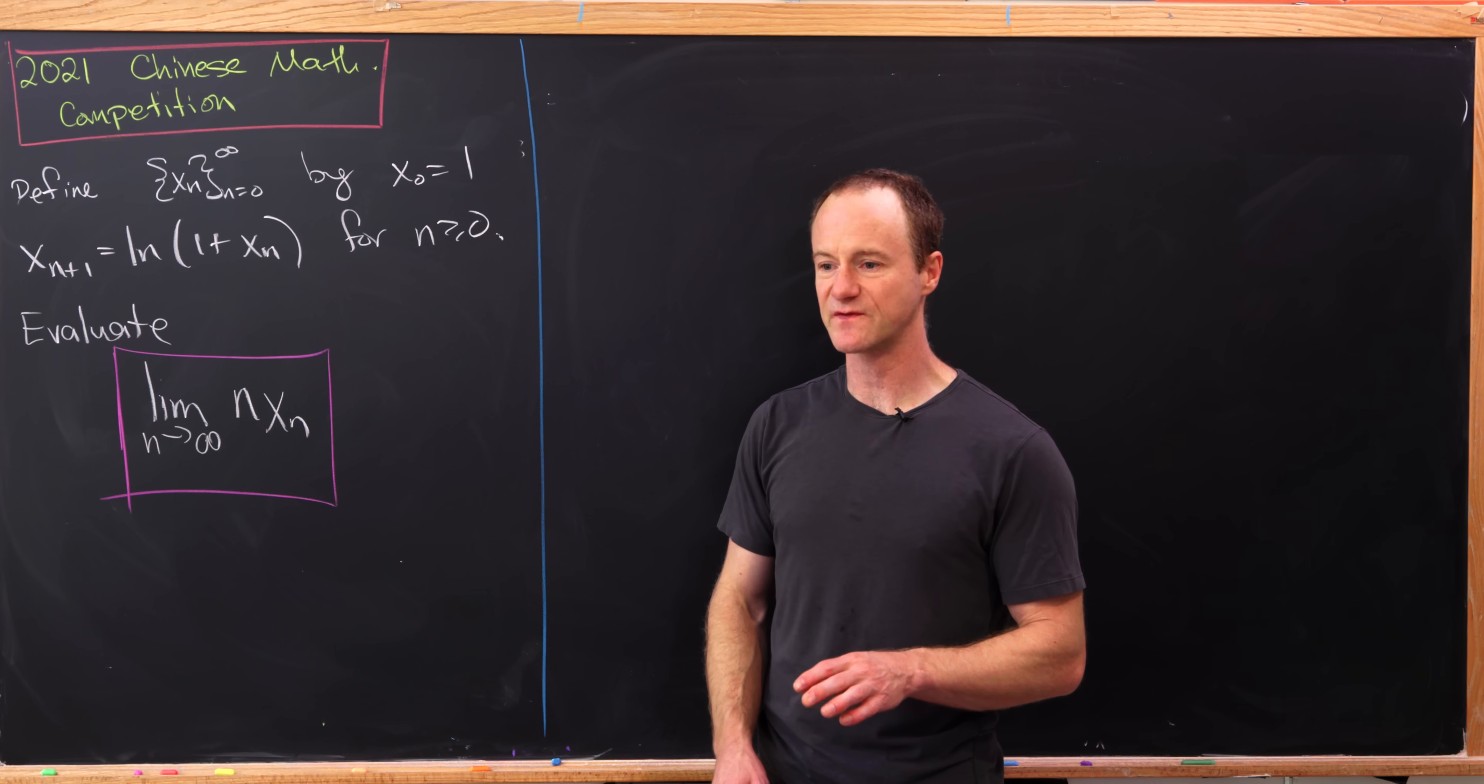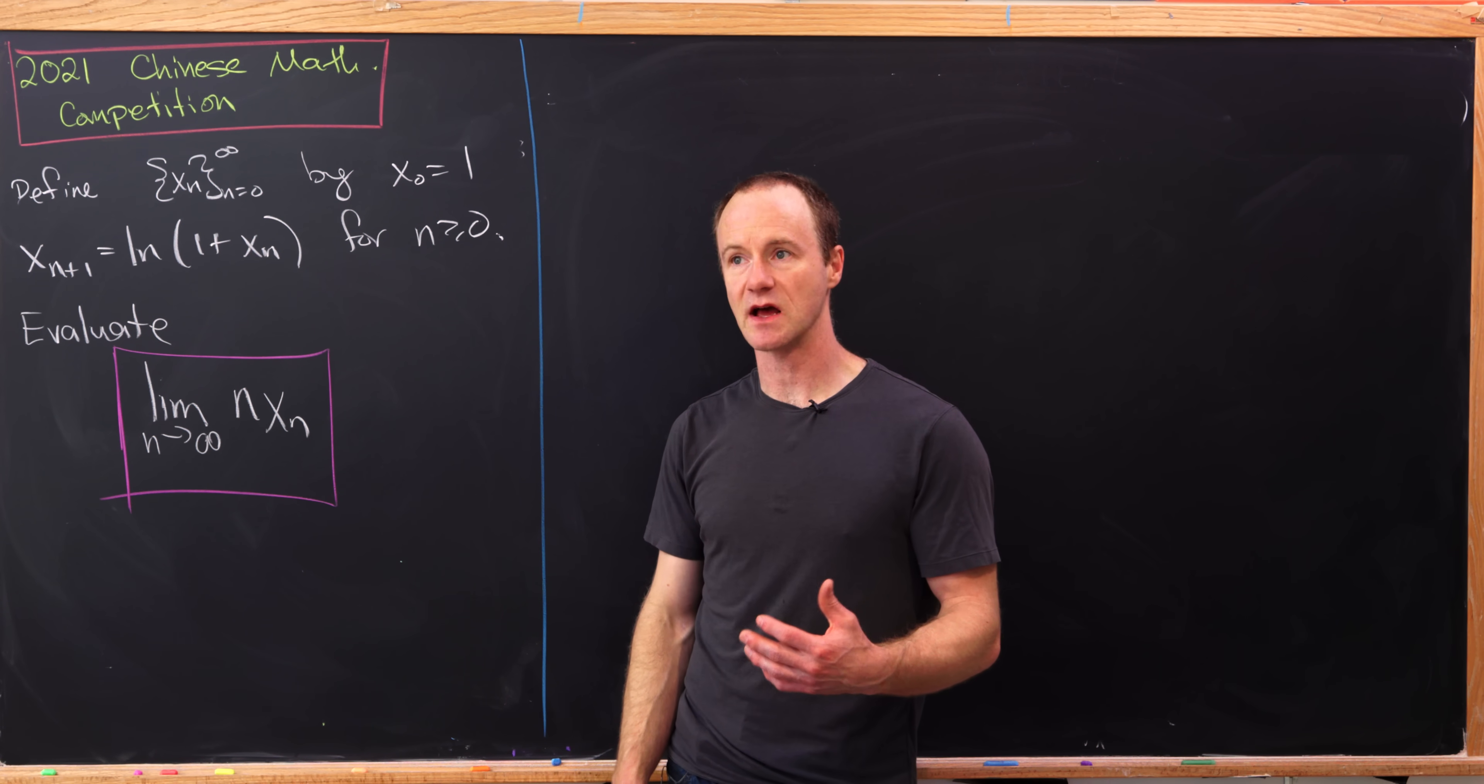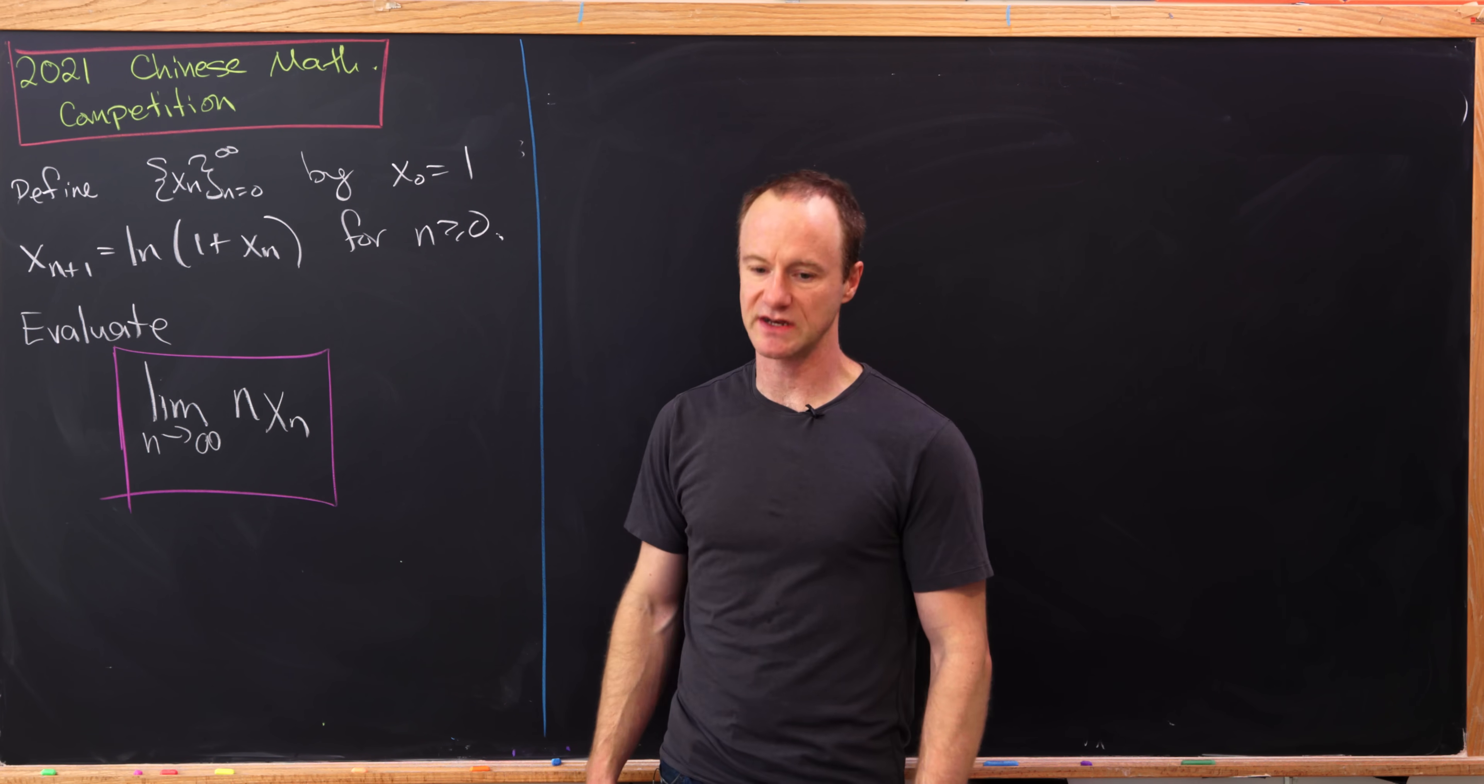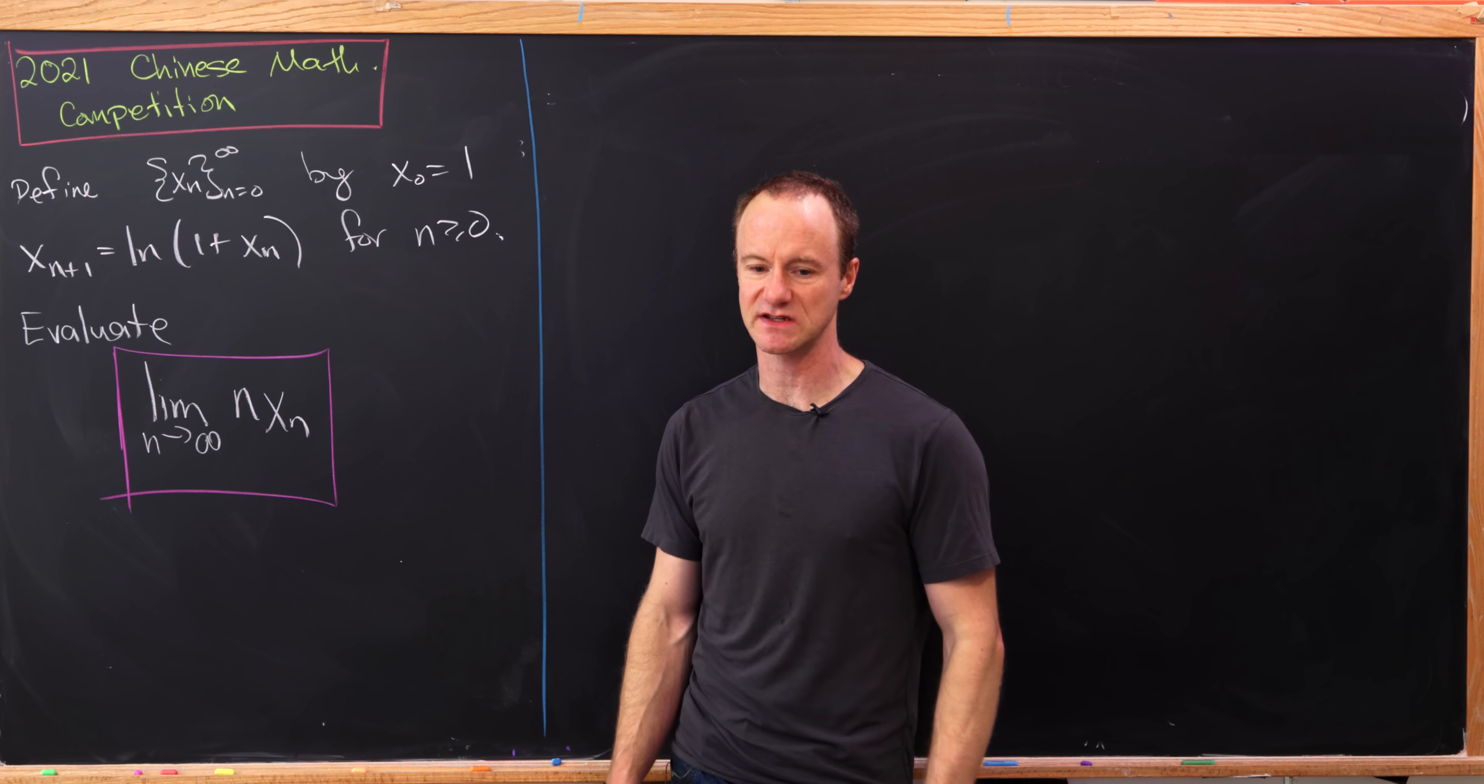So the first thing we'll do is find the limit of the x sub n sequence. Observe that this limit is not very interesting unless that limit is 0, because if that limit is a non-zero real number, then the fact that we're letting n go to infinity and multiplying by n will tell you that this limit will trend off to infinity.